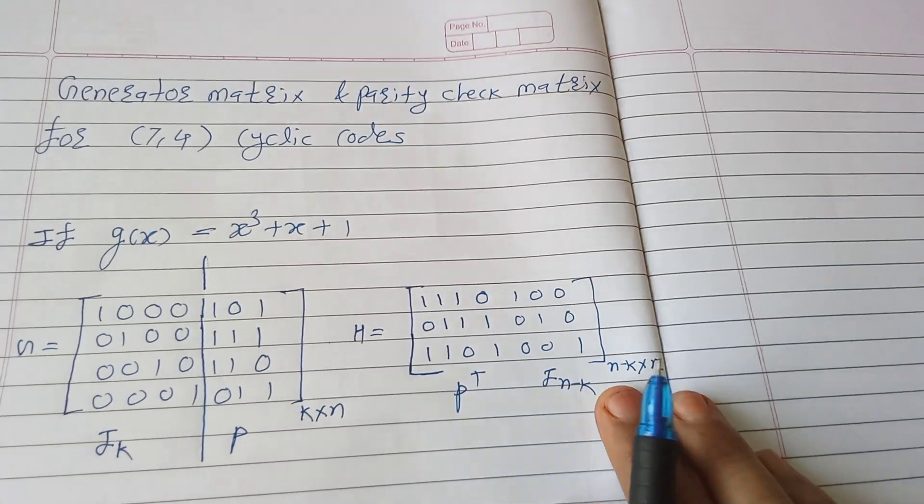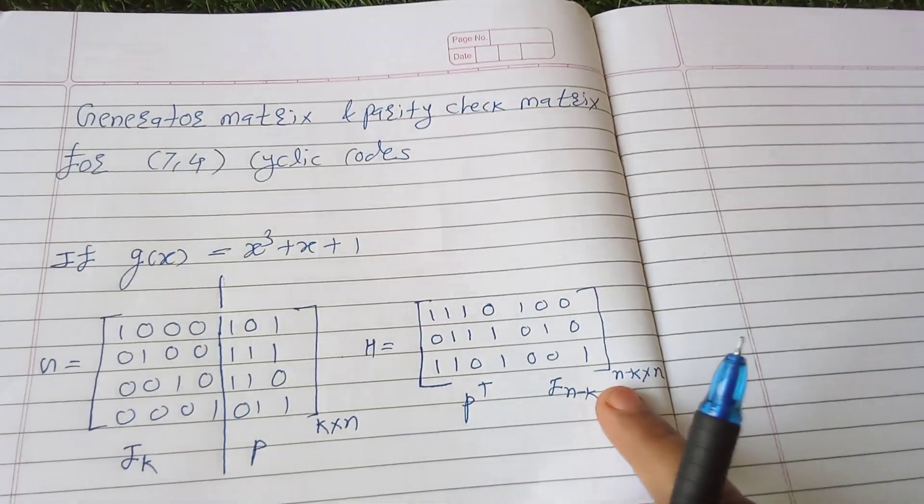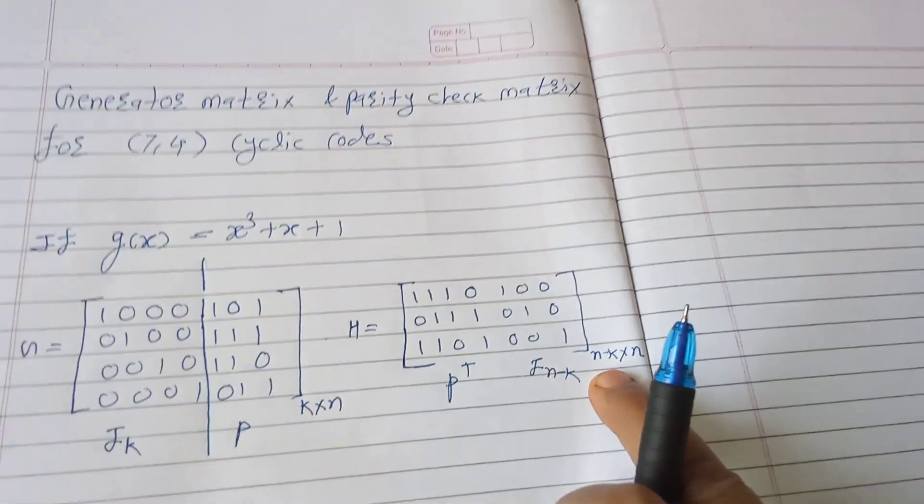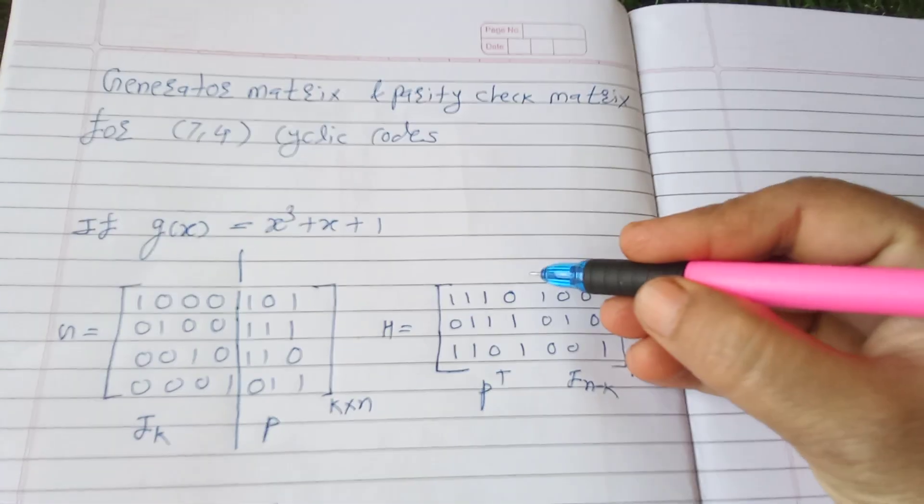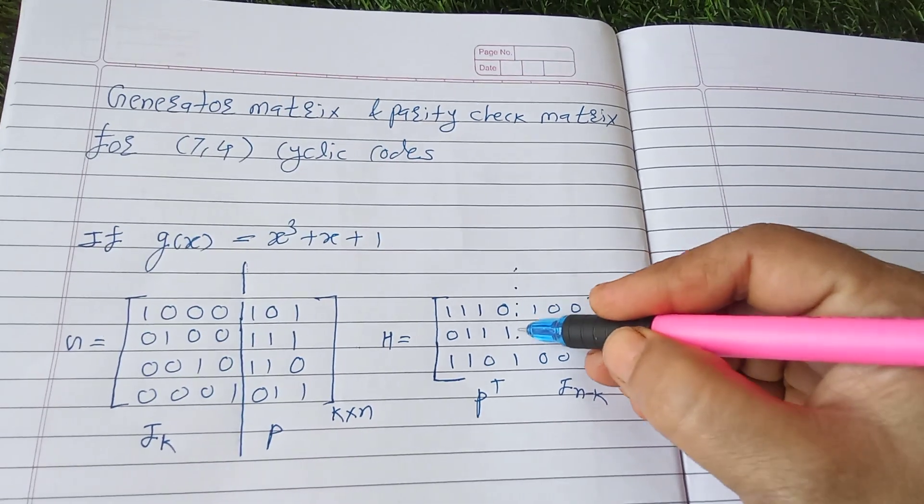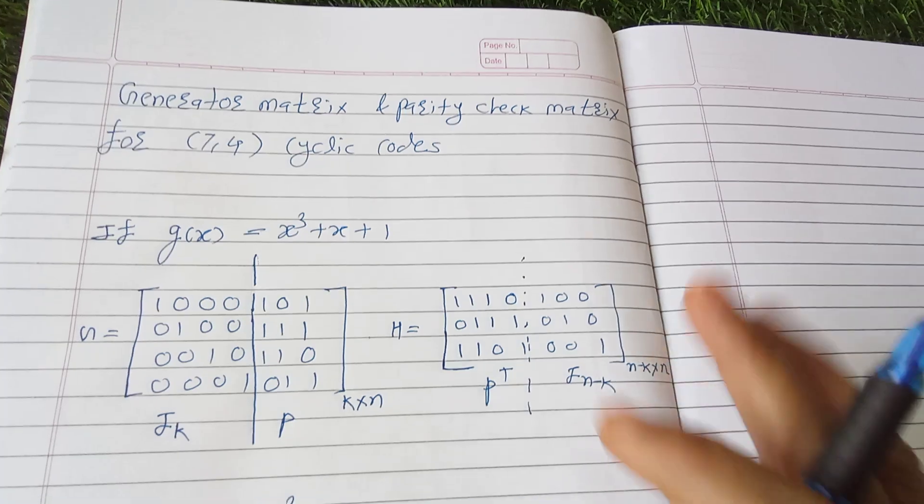So this is your H matrix. You have to remember P^T I_(n-k). N minus k into n is your dimension of parity check matrix, that is three rows and seven columns. Here also you can draw the line to distinguish between P^T and I_(n-k), but that is a whole matrix.